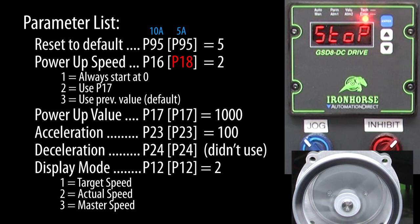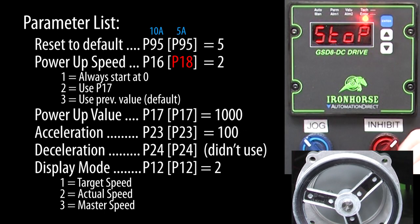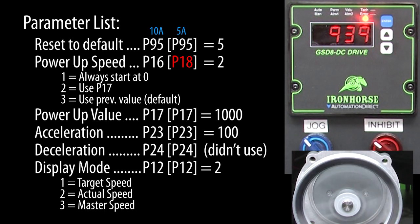This time let's scroll to parameter 0 and hit enter to get out of parameter entry mode. Now if I inhibit the motor and wait for it to stop, then remove the inhibit, sure enough our display is now showing us the actual speed of the motor.